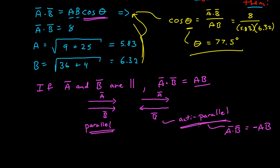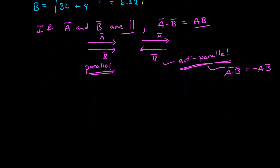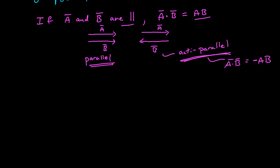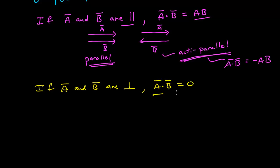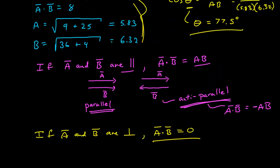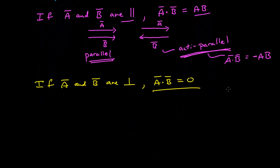You can see this directly from the geometric definition: if they're parallel, theta is zero and cosine is one; if they're anti-parallel, theta is 180 degrees and cosine theta is negative one. It's better just to remember these directly rather than going through that computation each time. In addition, if A and B are perpendicular, then A dot B is zero — because cosine of 90 degrees is zero. You encounter this a lot and can immediately identify that perpendicular vectors have a dot product of zero.